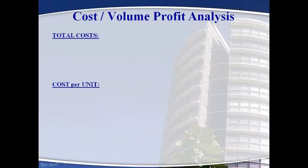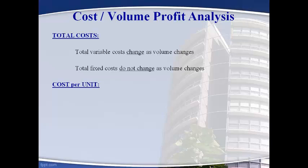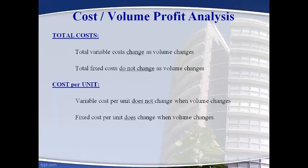Let's first discuss the primary principles of Cost-Volume Profit Analysis when it comes to total cost and cost per unit. Variable costs and fixed costs behave differently. When it comes to total cost, total variable costs change and total fixed costs do not change when volume changes. The variable cost per unit does not change regardless of volume, while the fixed cost per unit will change when volume changes.